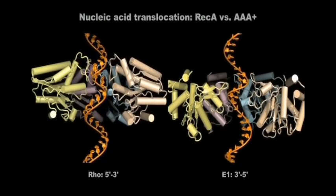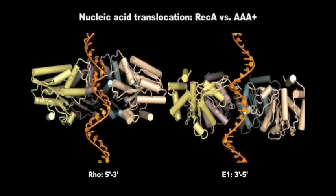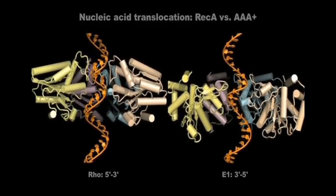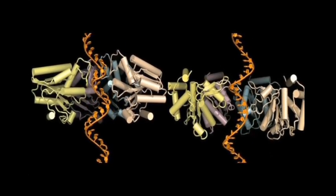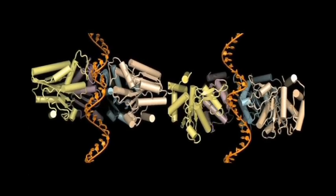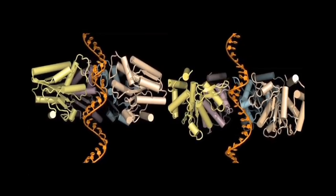A comparative analysis of Rho and E1 reveals that the two motors bind nucleic acid with the same relative polarity and utilize a very similar sequential stepping mechanism. This means that in order to translocate in opposite directions, Rho and E1 reverse their relative directions of sequential ATP hydrolysis.